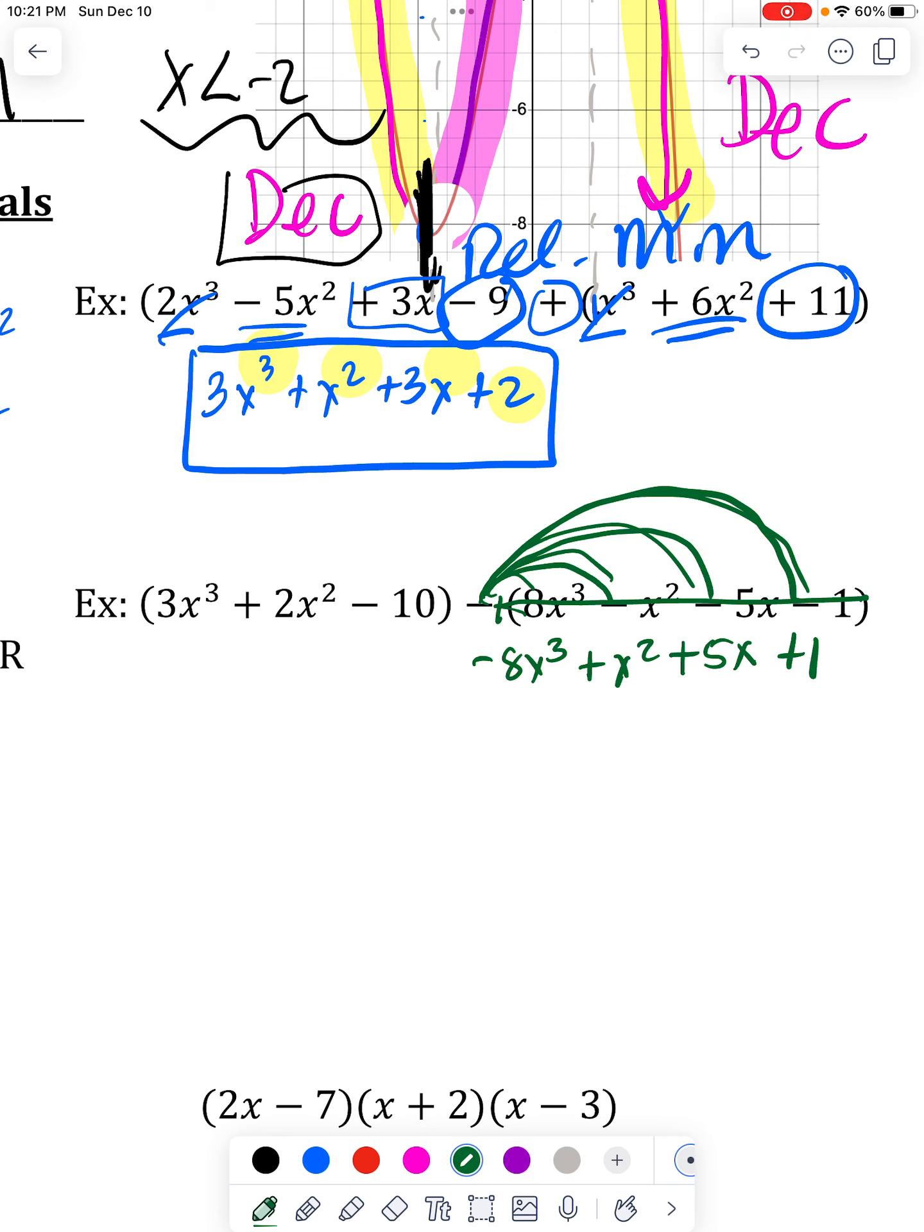And then I'm replacing my original problem with the problem, but that negative has been, or subtraction has been distributed. Now I can treat it like the problem up above and be like, there's an x³. Here's an x³. 3 minus 8 is -5x³.